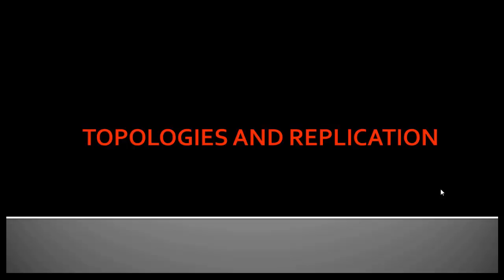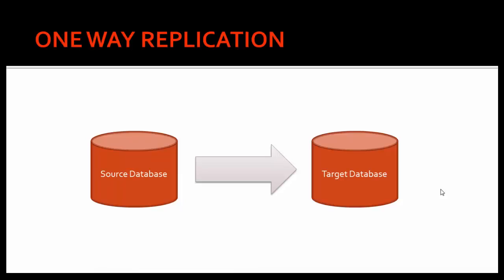In this chapter we will learn about topologies and replication. Topologies is the way you can set things up. In a network environment you call it network topologies — the different ways you can set up a network. Similarly, topologies are used in other things like electrical topologies, database topologies, and we also have replication topologies in GoldenGate. We can set up GoldenGate to different requirements, and these different setups are the topologies.